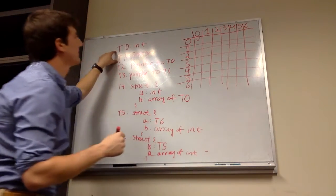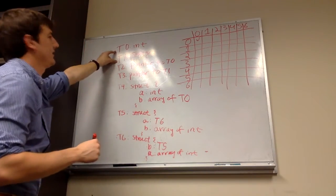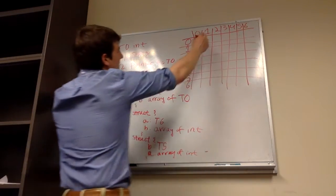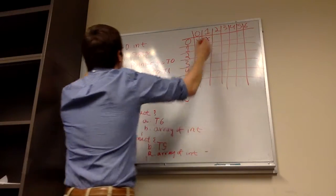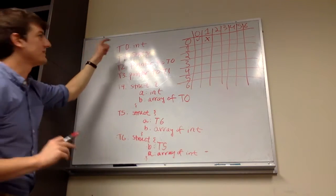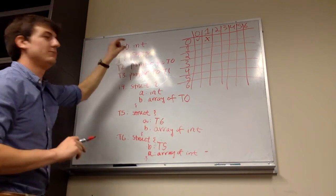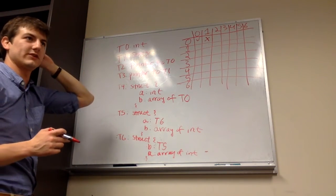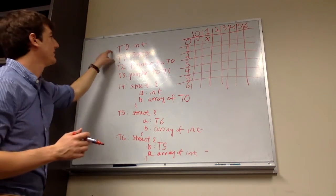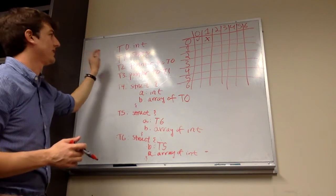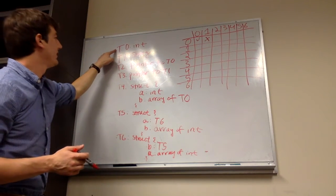T0 and T1, are they structurally equivalent? No. We know one's an int and one's a string. Ints can't be strings, so they're two basic types. Two basic types that are not the same basic type are not structurally equivalent.